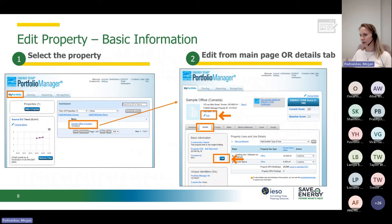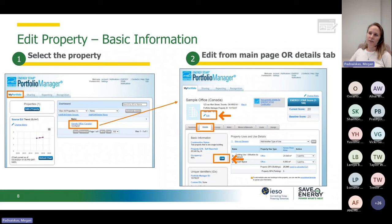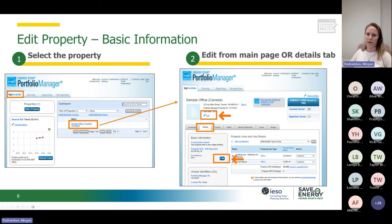If I'm going too fast, don't hesitate to write in the chat or raise a hand and Annabelle will tell me. To edit information of your properties — which is very useful when you've input something wrong or need to edit a property use detail — you have to go into your property. Go to My Portfolio, click on the tab at the top left, and select your property. Once you're in the portfolio, you have seven different tabs at the bottom with different areas where you can edit property details.